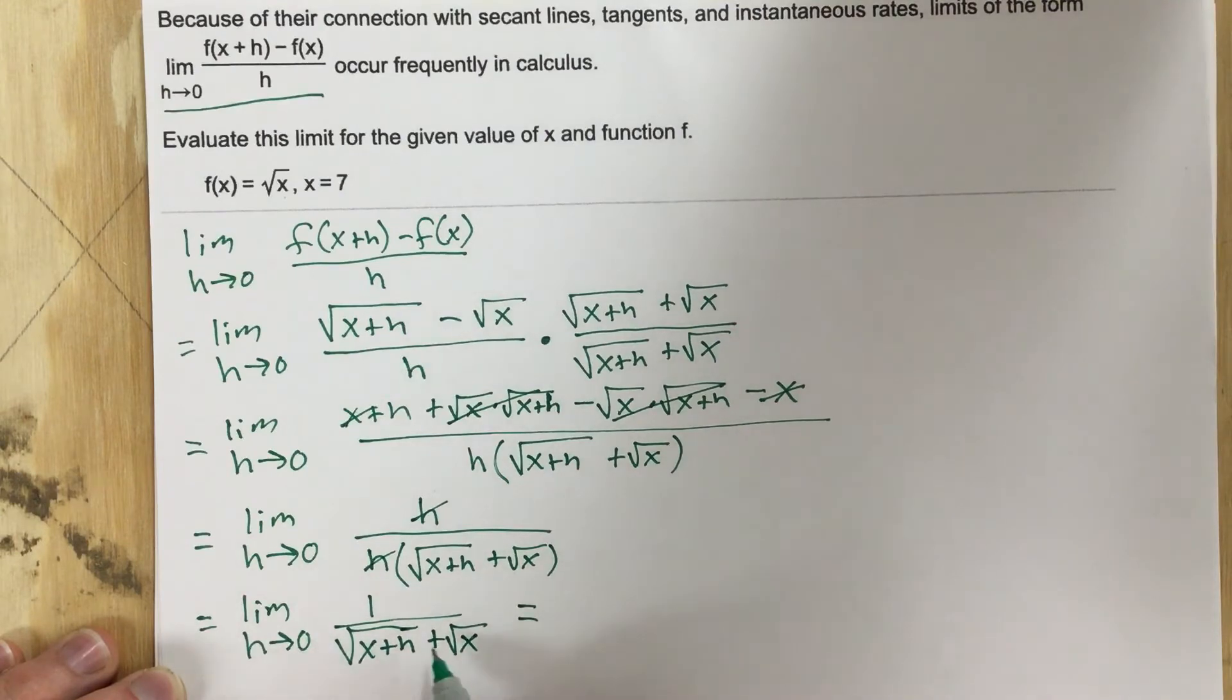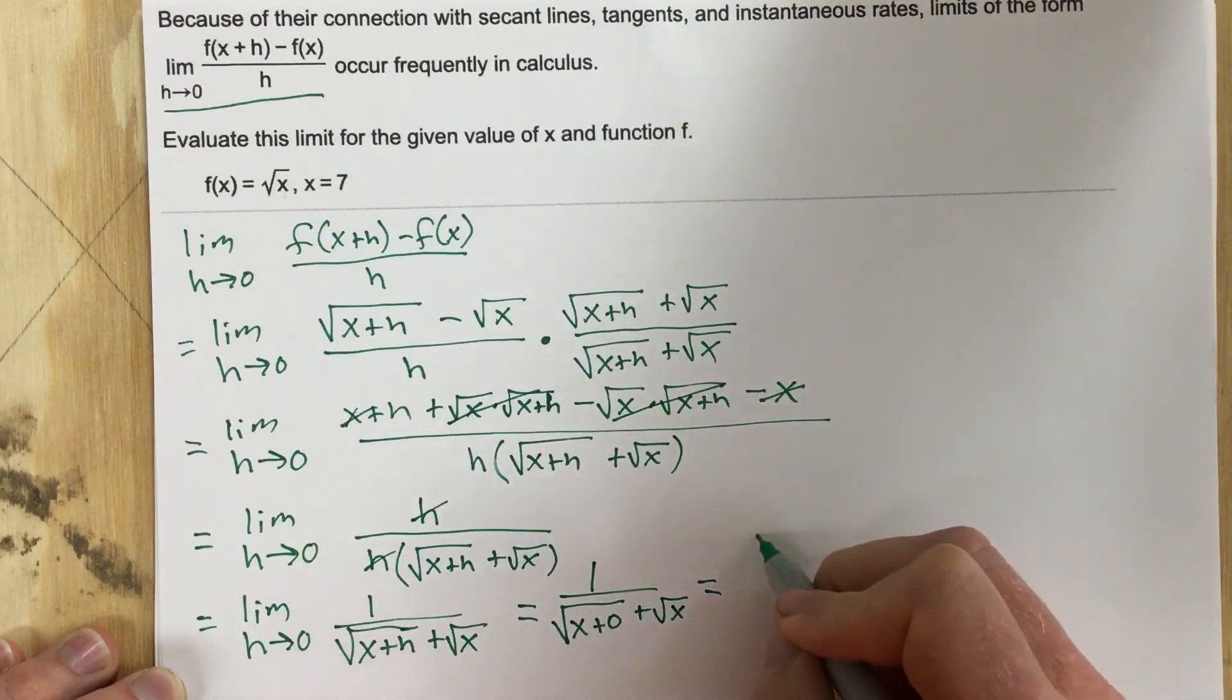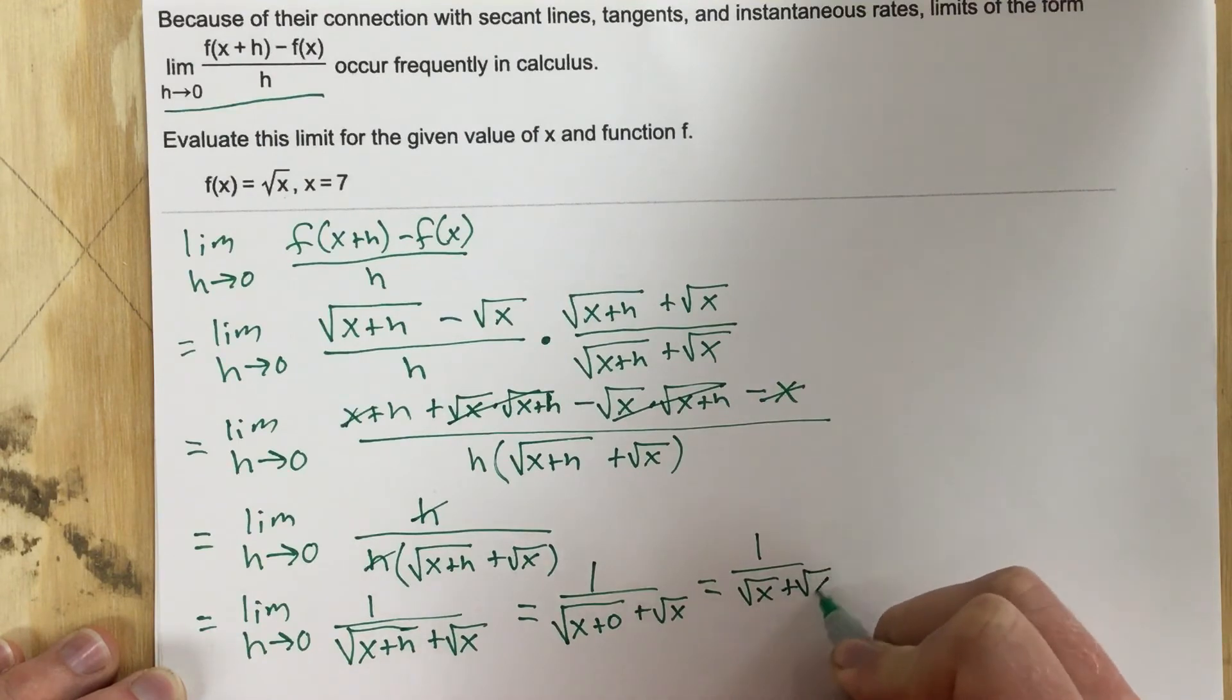When I plug in the 0 now to check to see if this works, I end up with 1 over root x plus root x. Well, this just gives root x. So it's 1 over root x plus root x, which is equal to 1 over 2 root x.